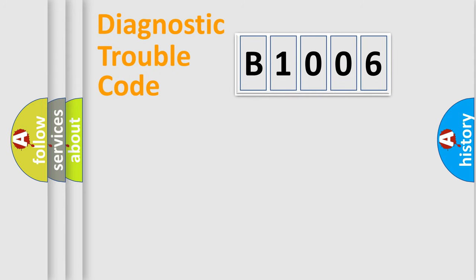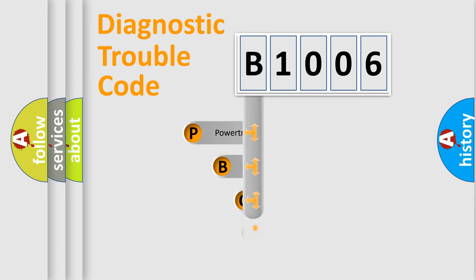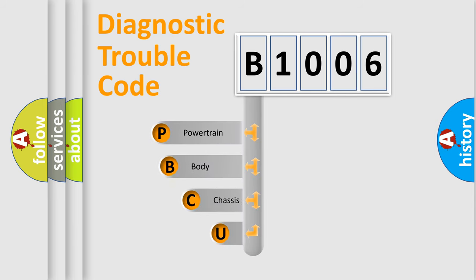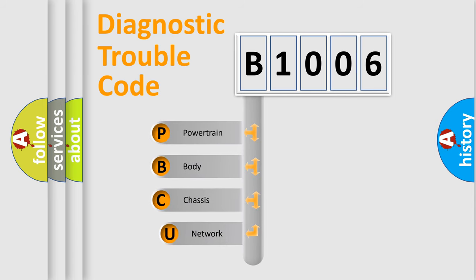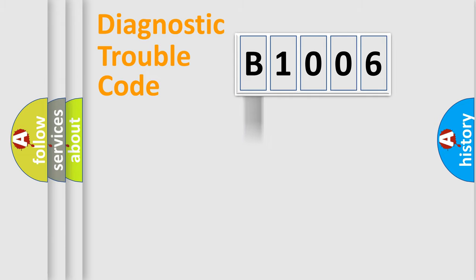Let's do this. First, let's look at the history of diagnostic fault code composition according to the OBD2 protocol, which is unified for all automakers since 2000. We divide the electric system of an automobile into four basic units: Powertrain, body, chassis, and network.